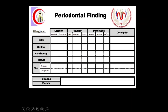Localization means whether the color change, contour change, or consistency change is localized or generalized. Localized means the affected sites are less than 30 percent; generalized means the affected sites are more than 30 percent. Severity is classified as mild, moderate, or severe according to your case.